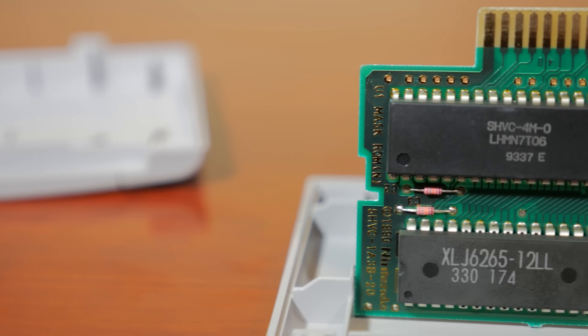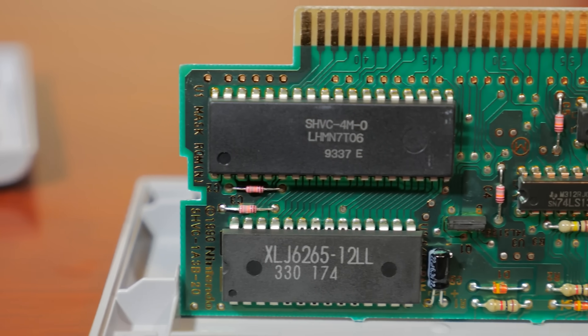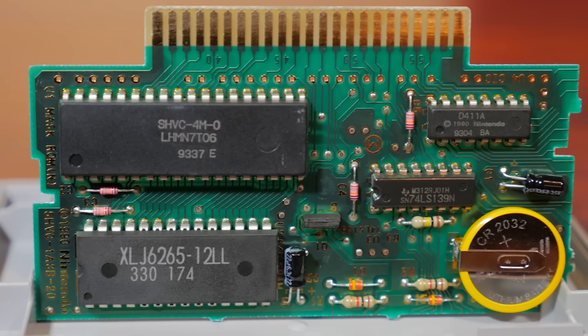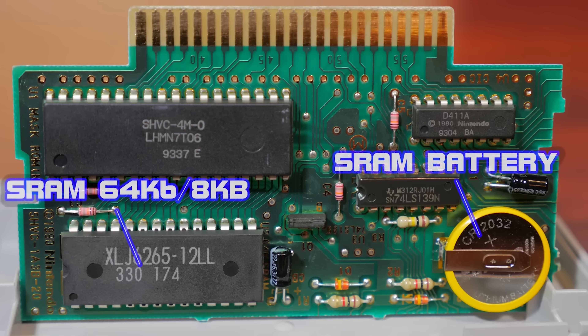To access the data, a line is activated to allow the processor to either read or write these bits to the SRAM data, and the RAM is volatile, requiring constant power to retain data. Without it, contents vanish almost immediately in a matter of milliseconds.